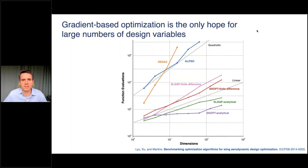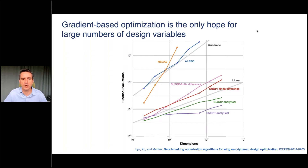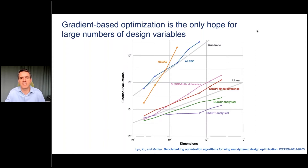There are two main classes of optimization algorithms: gradient-free methods and gradient-based methods. Gradient-free methods do not scale well with the number of design variables. For hundreds of variables — parameterizing structural sizing, aerodynamic shape — the only hope is gradient-based algorithms. To use gradient-based optimization efficiently, you need analytic gradient computation methods. Our group has dedicated significant research to computing gradients efficiently to use with gradient-based optimization.